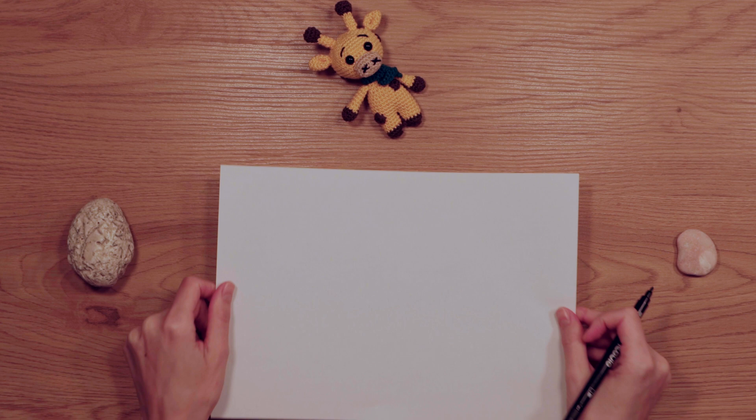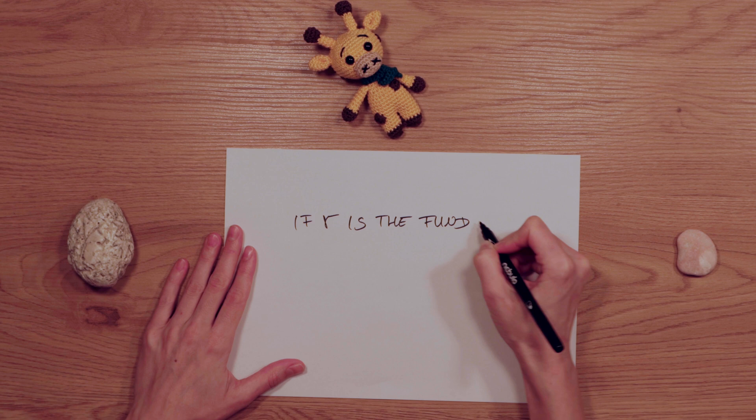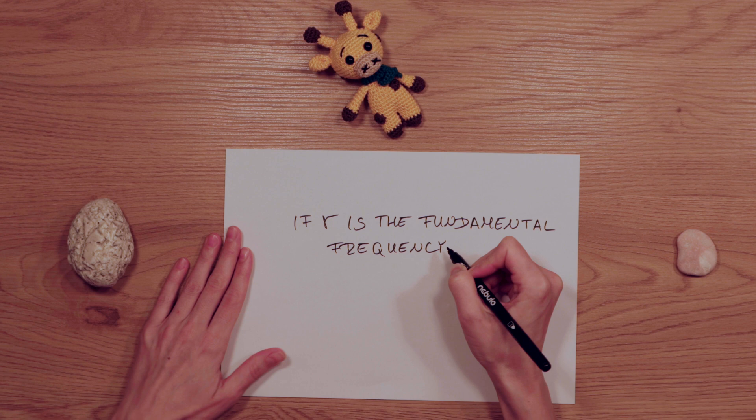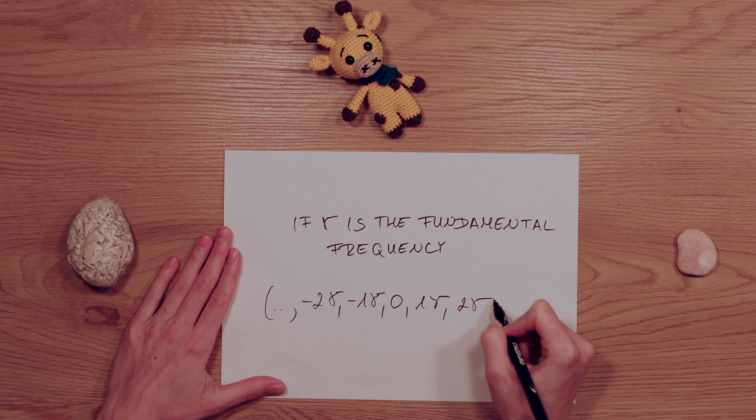In musical terms, a complex tone whose components are whole number multiples of the fundamental. For example, if the fundamental is 100 Hz, then the first overtone is 200 Hz, the second 300 Hz, the third 400 Hz, and so on. Since a clock multiplier usually produces integer multiples, we can create our overtone series using the Shuffling Clock Multiplier.